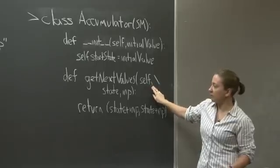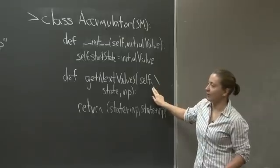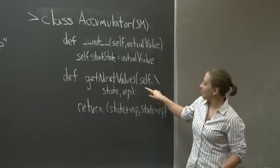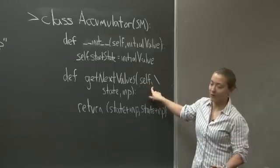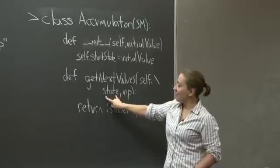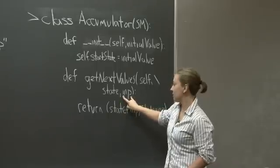I also want something called get next values, which is the functional equivalent of the transitions. Here's our self again from object-oriented programming, but we don't care about that.